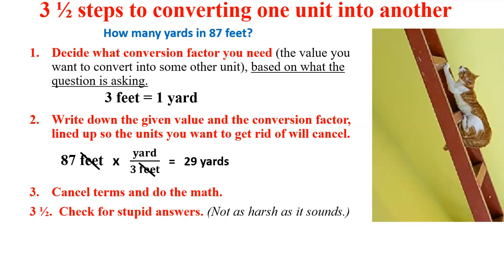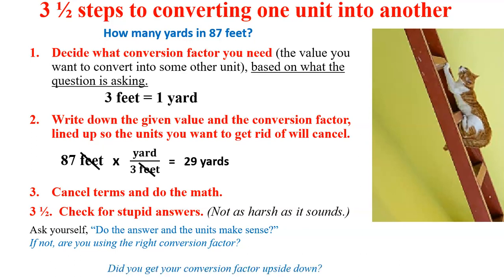And then the last critical step is what I call step three and a half, check for stupid answers. And of course, this isn't calling anybody stupid. It's just check for answers as you can see readily that don't make any sense. Does the answer and the units make sense? And if they don't, first thing you need to ask if you're using the right conversion factor. That's not really an issue here with everyday sort of problems. But the other one might be did you get your conversion factor upside down. So a very common example of an incorrectly worked problem, it's not so common in feet to yards, but just using this as an example, is getting the conversion factor upside down so that the feet don't cancel.